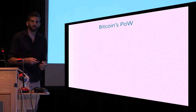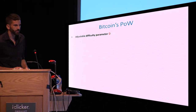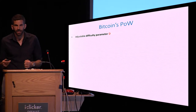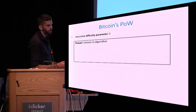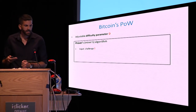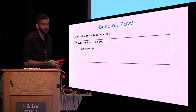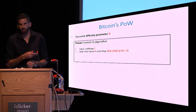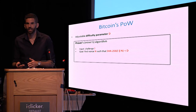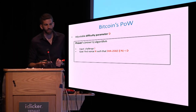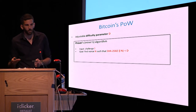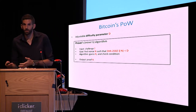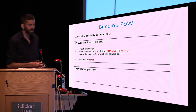We will now go over the most basic proof-of-work, which is the one used in Bitcoin. In Bitcoin proof-of-work, there is a global adjustable difficulty parameter D that controls how hard it is to generate a proof. The prover's algorithm takes as input a challenge I, which can be deterministically computed using the previous block and the transactions on the current block. The goal of the prover is to find a nonce N such that concatenating N to I and executing SHA-256 on the obtained string will be less than D. Since SHA-256 is safe, the best algorithm is an exhaustive search, and the proof is the nonce N.